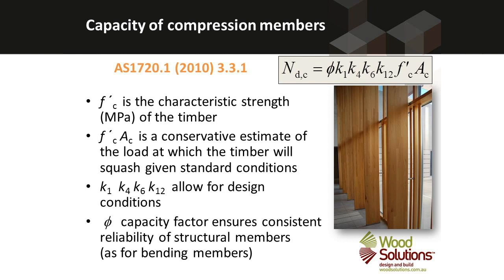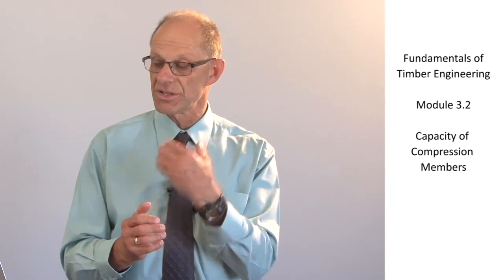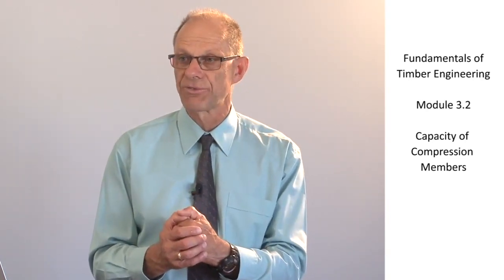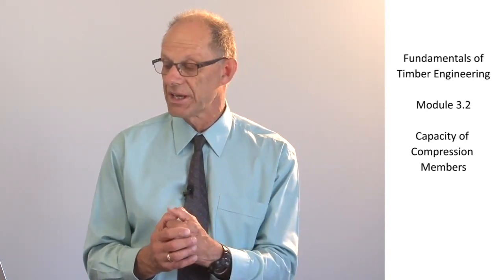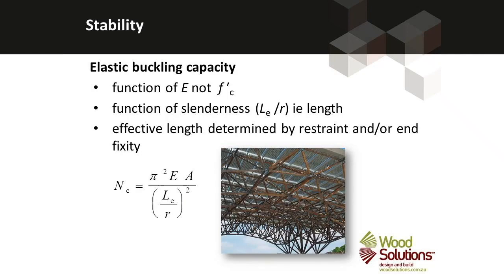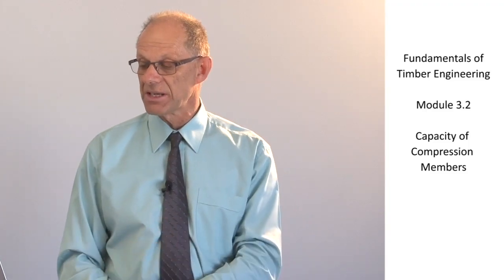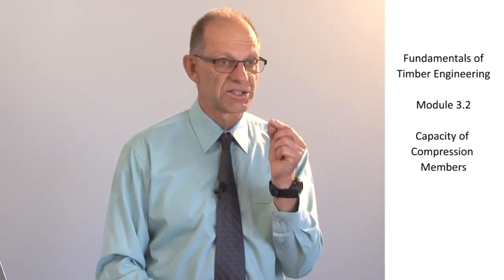At the end of the expression, you can see a compressive strength times a compressive area. Stability is all about buckling. The Euler buckling formula shows that the critical capacity of a column is inversely proportional to the length of the column — the longer the column, the more likely it is to buckle and the lower the load it can carry. The stability factor must therefore reflect the slenderness of the member.